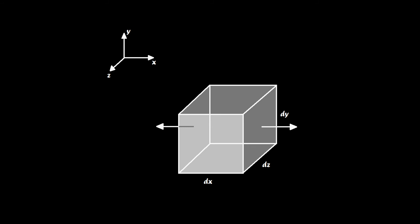Let's consider an infinitesimal body of unit size with dimensions given here. There is a uniaxial stress on this body — let's call it sigma x. We can calculate the force associated with this stress by considering the area dy times dz, so the force will be sigma x times dy times dz, where dy·dz is the infinitesimal area of the element.